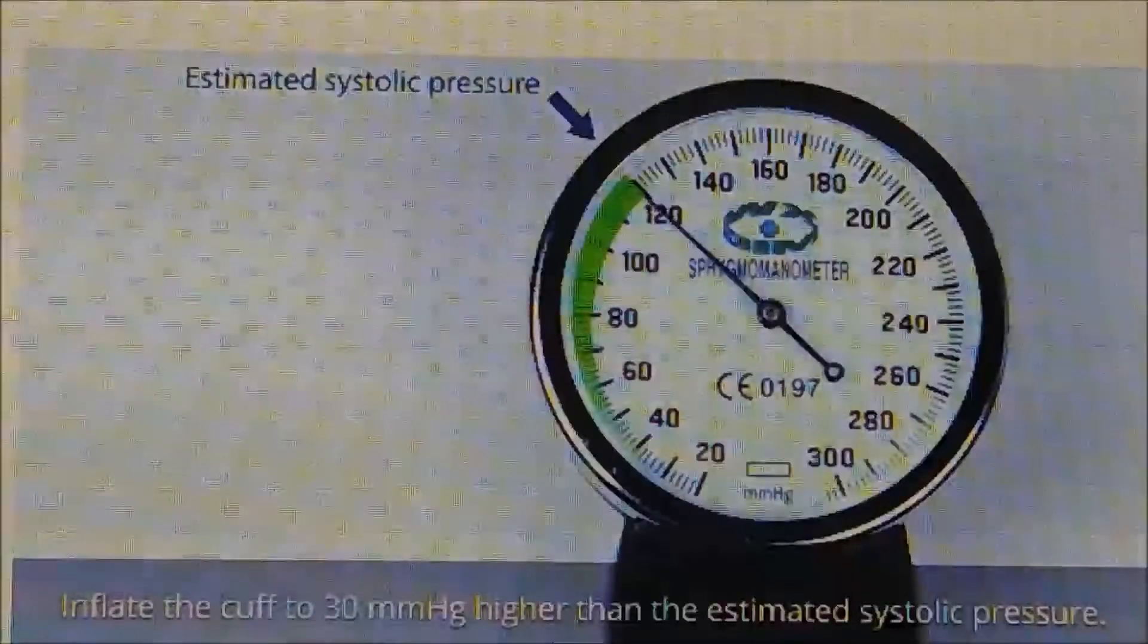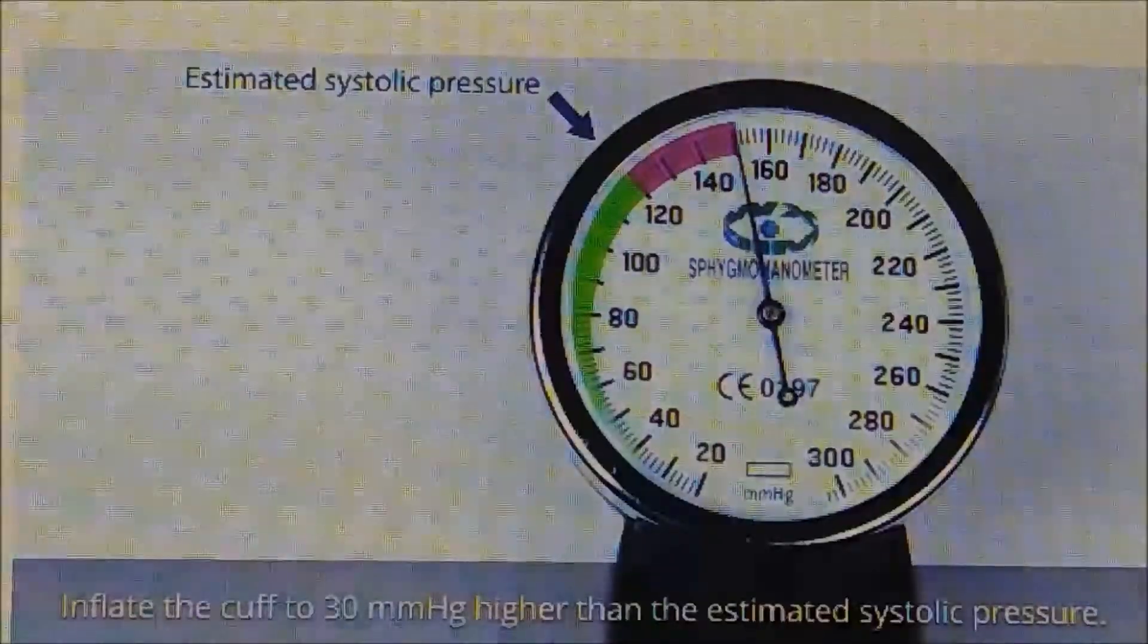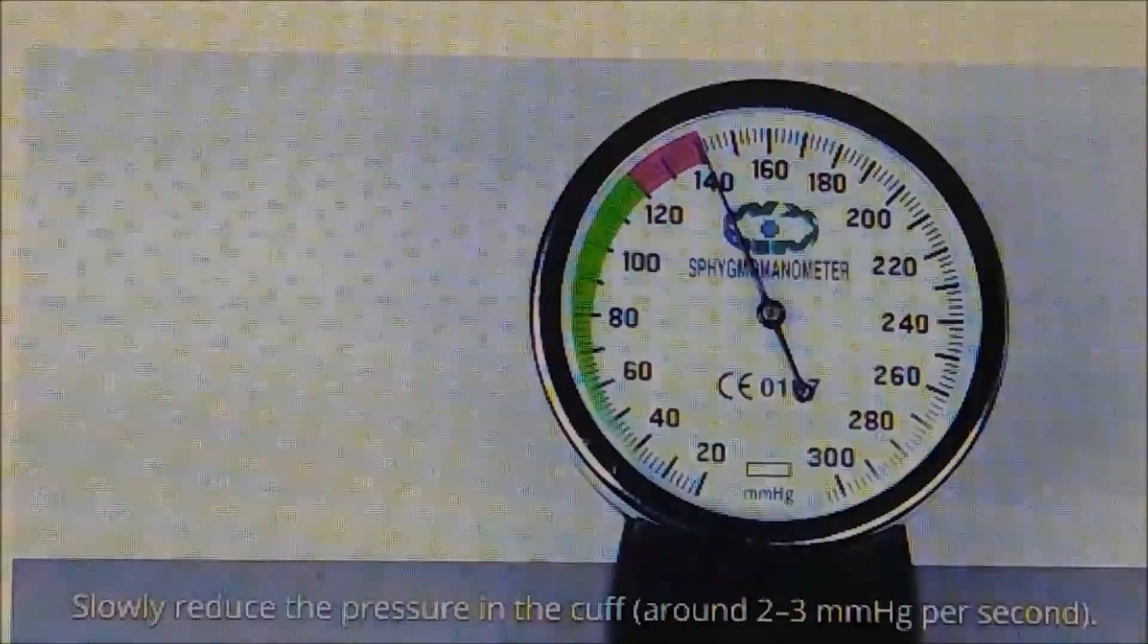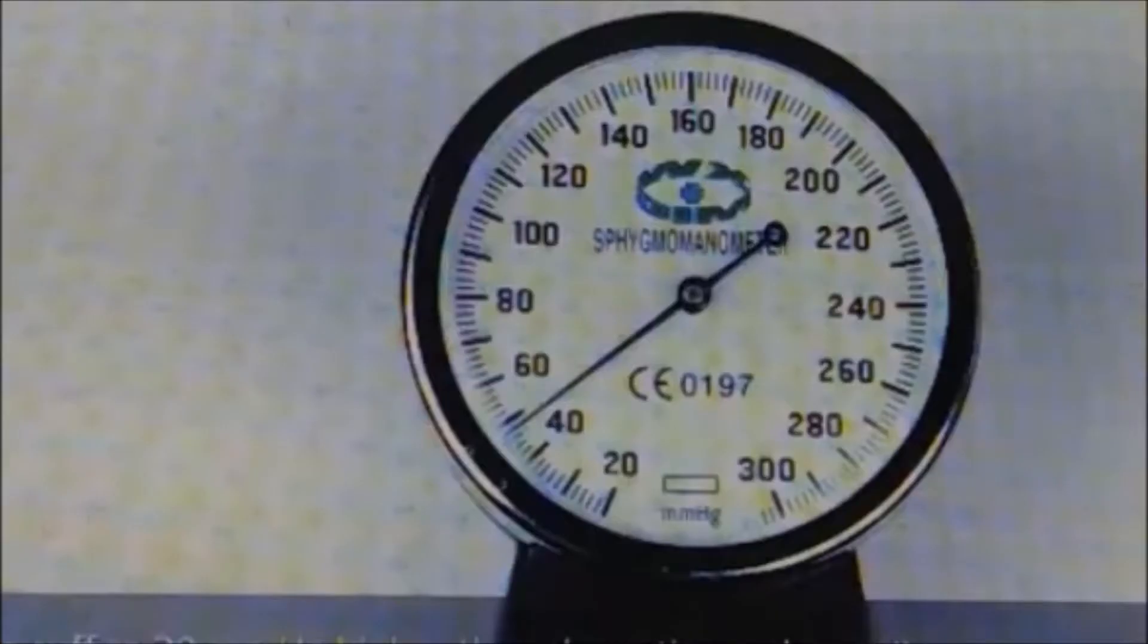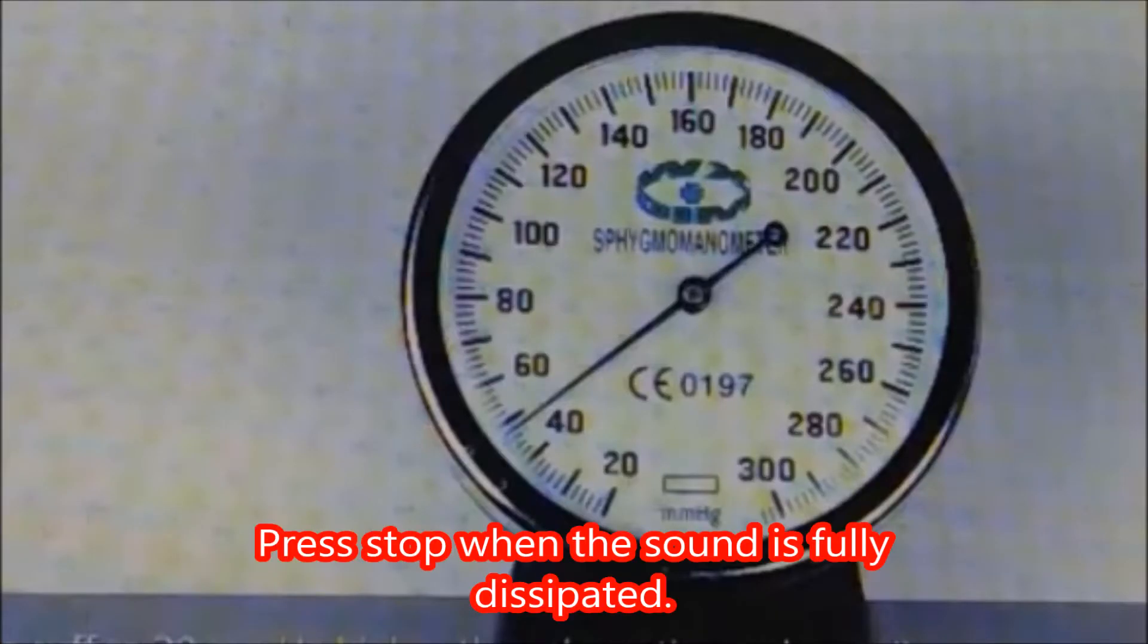Press start and inflate the cuff to 30 millimeters higher than the estimated systolic pressure. Now slowly reduce the pressure in the cuff. Wait for the sounds of Korotkoff to be picked up by the cardio microphone. Press stop when the sound is fully dissipated.